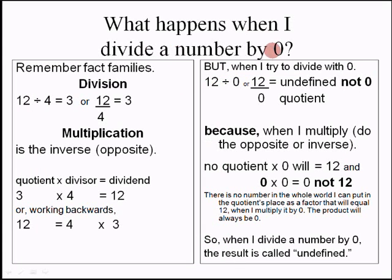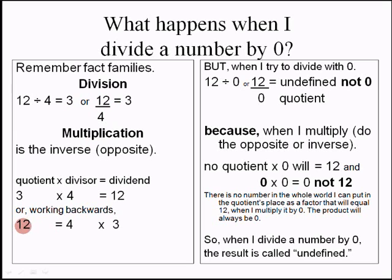What happens when I divide a number by 0? Remember — division by 0 is not allowed. Why? 12 divided by 4 equals 3, because multiplication is the inverse operation: quotient times divisor equals dividend. 3 multiplied by 4 equals 12, which is the dividend. Working backwards: dividend equals quotient multiplied by divisor — 12 equals 4 times 3.